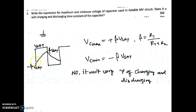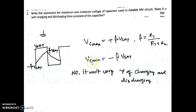We know that the capacitor voltage in an astable multivibrator will vary depending on the output voltage. If the output voltage is +Vsat, the capacitor voltage will charge up to beta*Vsat. If it is -Vsat, it will go up to -beta*Vsat. So capacitor maximum voltage is +beta*Vsat and capacitor minimum voltage is -beta*Vsat.